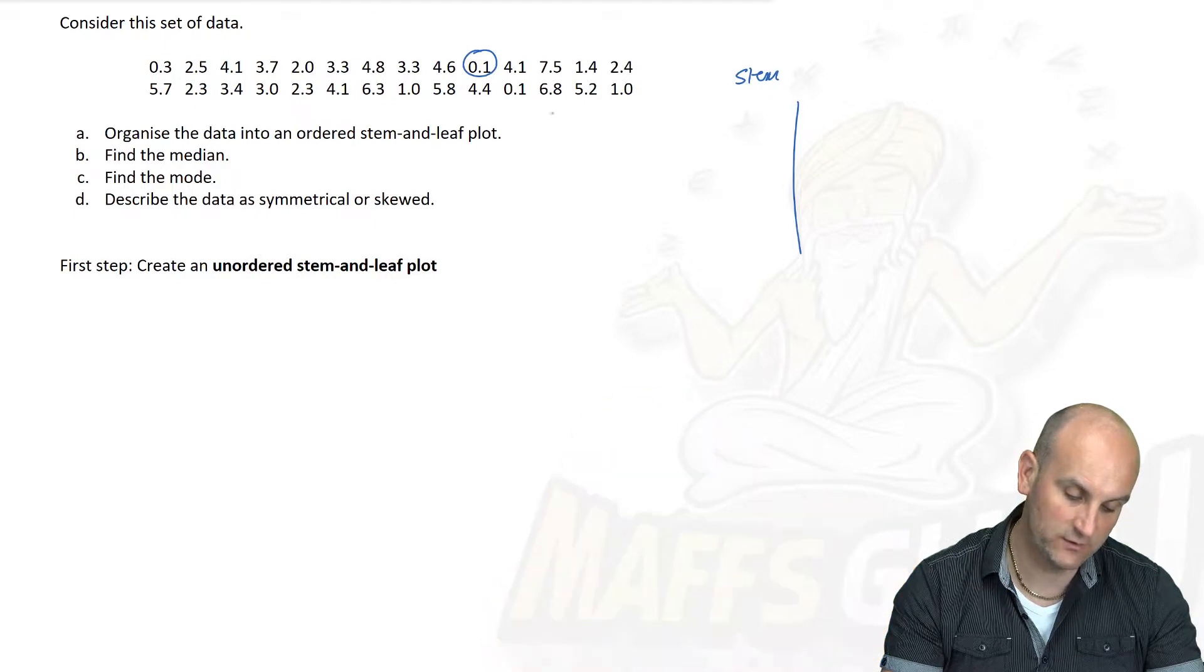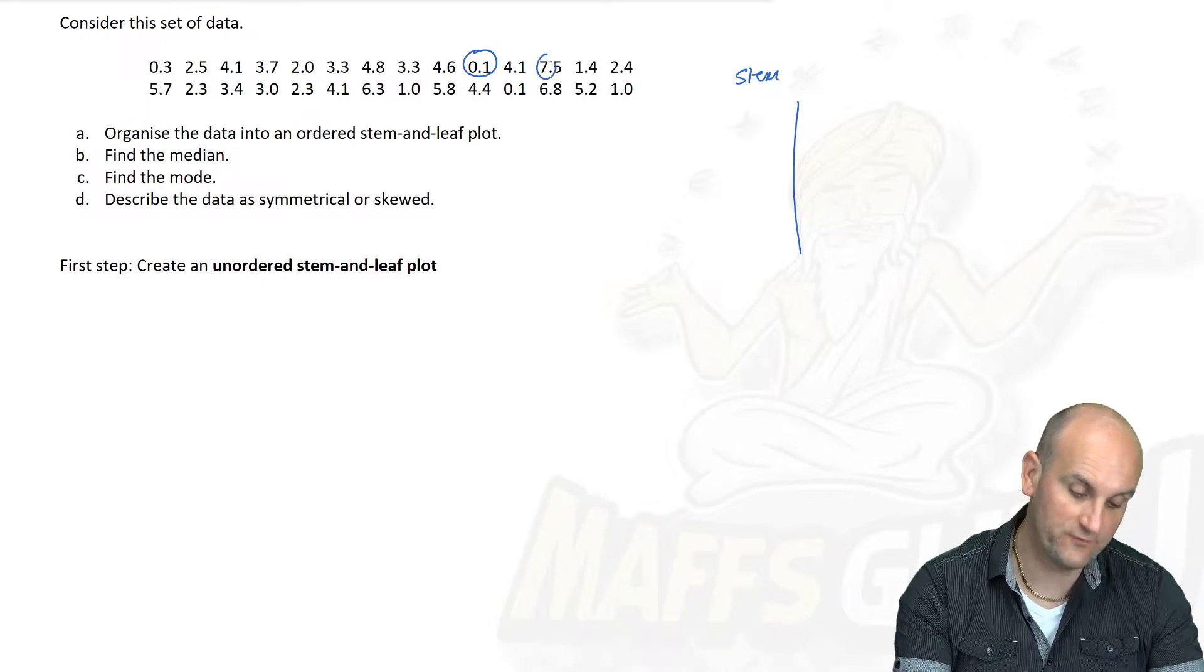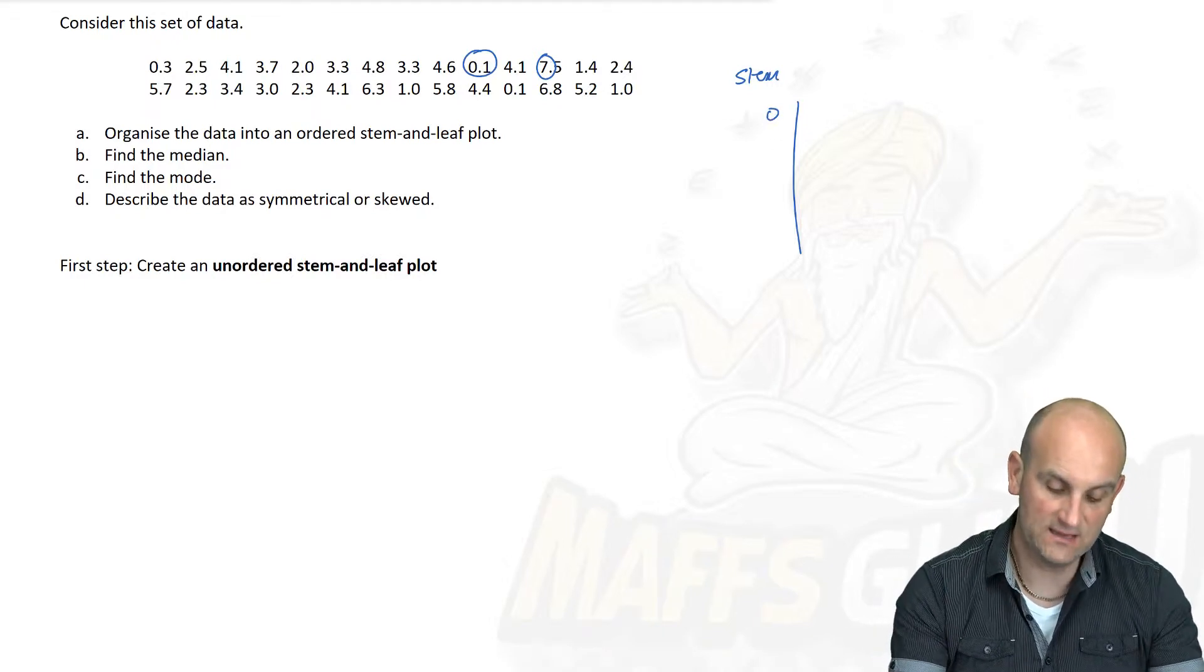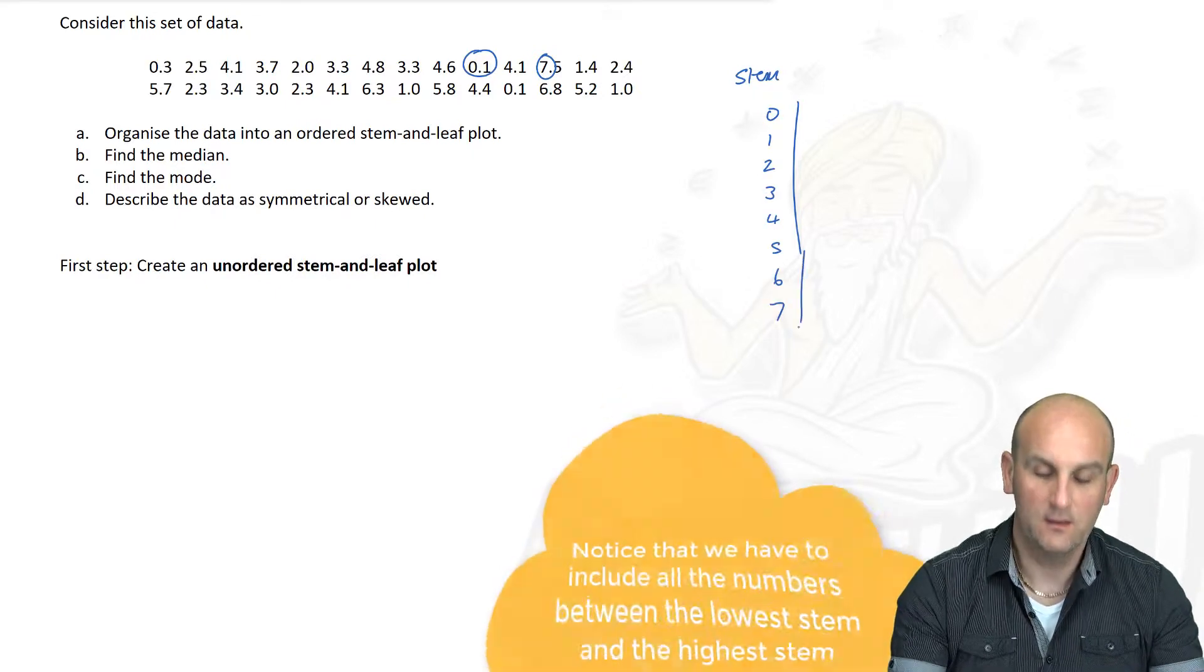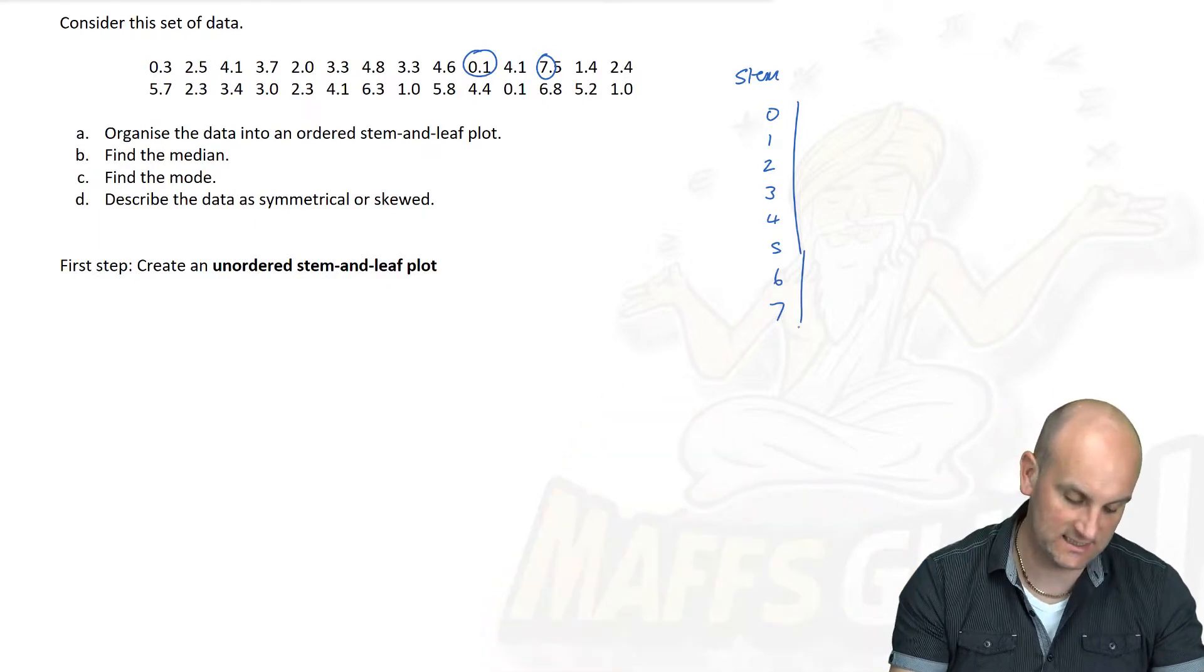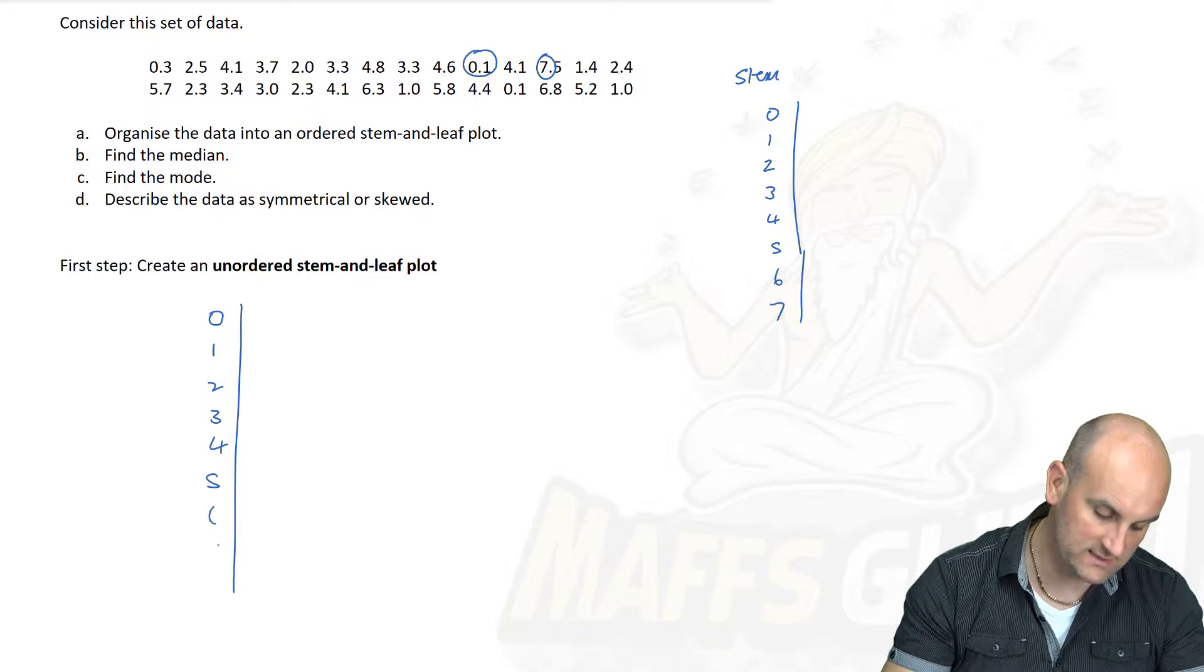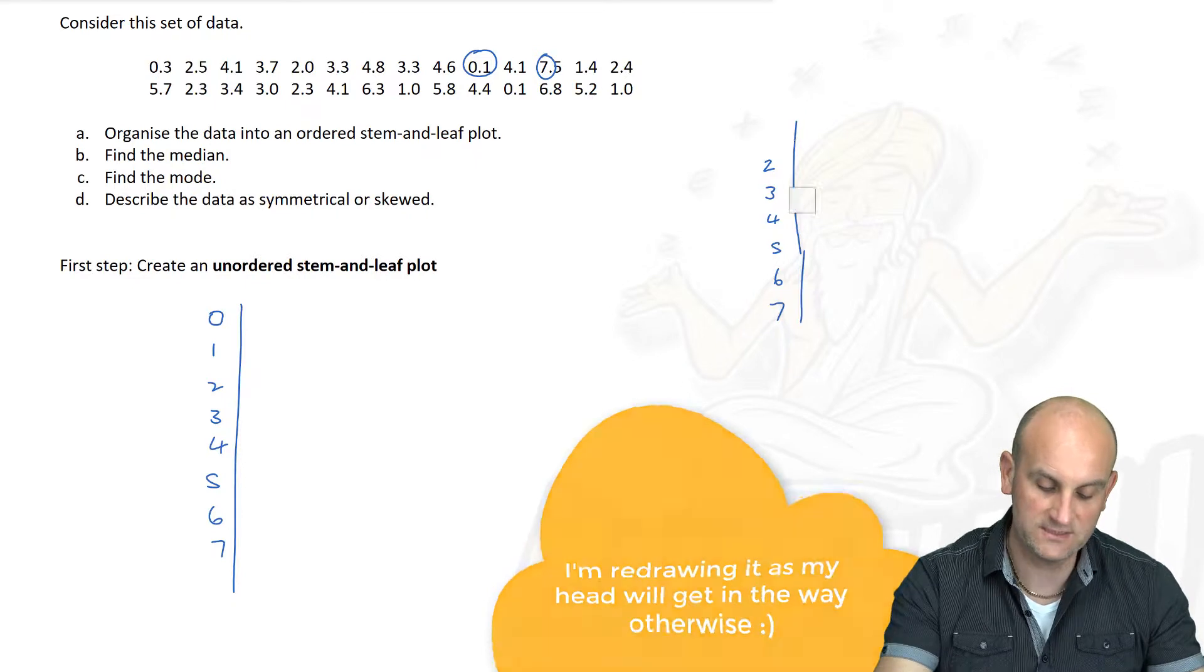Now we know that we're going to put our Stem numbers going between 0 and 7. So 0, 1, 2, 3, 4, 5, 6 and 7. Having got that, the rest becomes relatively simple. Let's create an unordered Stem and Leaf Plot. I'm going to leave a little bit of gap down there just in case.